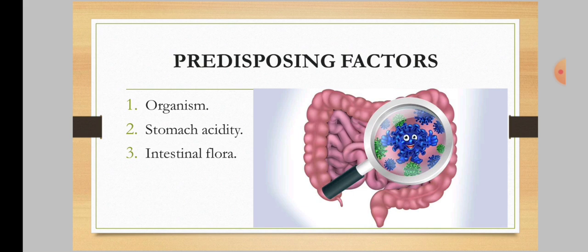Third, intestinal flora — the normal intestinal flora produces short-chain fatty acids which are lethal to Salmonella. When these are reduced by antibiotics, the patient is more prone to typhoid.